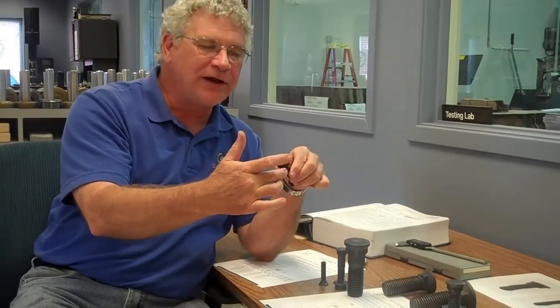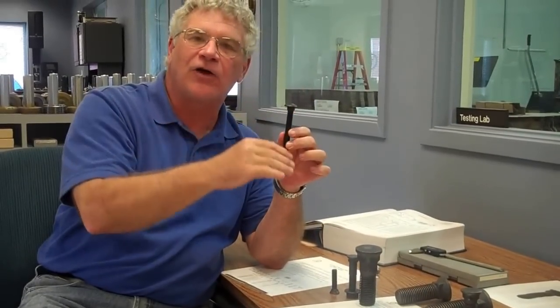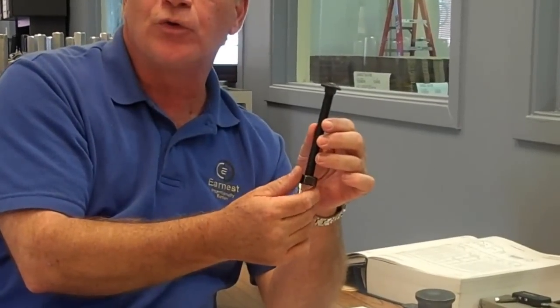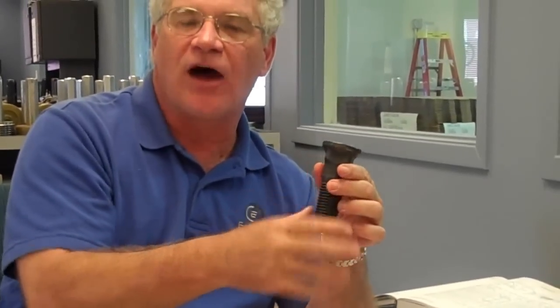A carriage bolt is also a round headed design with a square neck underneath it, but there's no countersink underneath the head - it's totally flat across the bottom. And to us, this is a carriage bolt. To a lot of plow equipment and companies, they call this thing a plow bolt.